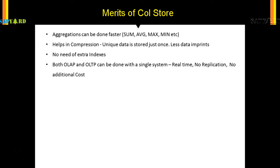The most important point is that OLAP and OLTP both can be done in the same system, so there is no need for a BW system, no replication needed, and no additional cost for maintenance and support of the BW system. On top of that, the data is real-time — you can get a very complex report on the fly, which is possible because of the software, hardware, and design innovation of SAP HANA, and column store is one of them.